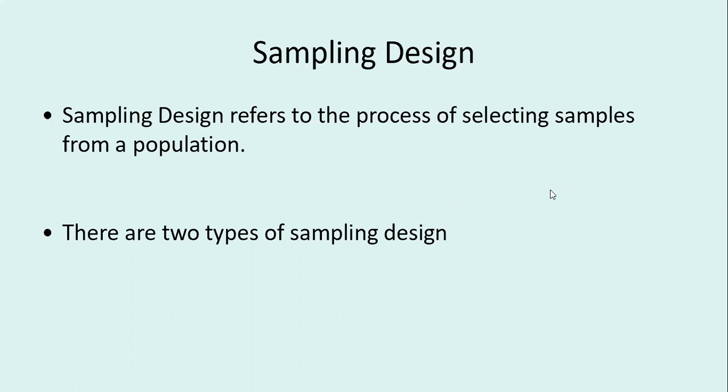Sampling design is very important in any research. If our sampling design is not done properly, then we cannot generalize the results — our sample can be biased and the results can be biased. Sampling design plays a very important role in any research. Sampling design refers to the process of selecting samples from a population. This process is sampling design.